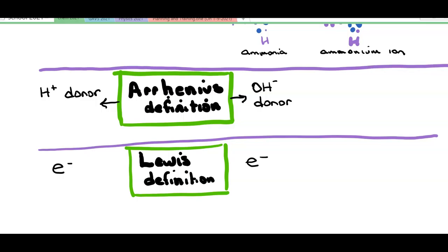And the third and final definition focuses in on the electron. A Lewis acid is an electron pair acceptor, where a Lewis base is an electron pair donor.